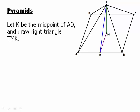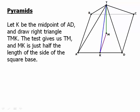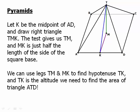Let K be the midpoint of AD and draw the right triangle TMK. TM is the height of the pyramid; KM is half the base of the pyramid. The test will give us TM (the height) and the base — we divide that by two to get MK. Then we use the Pythagorean theorem to find TK, the hypotenuse, which runs up the middle of the triangle and is the altitude of the slanting triangle face. That's what we need to find the area of triangle ETD.